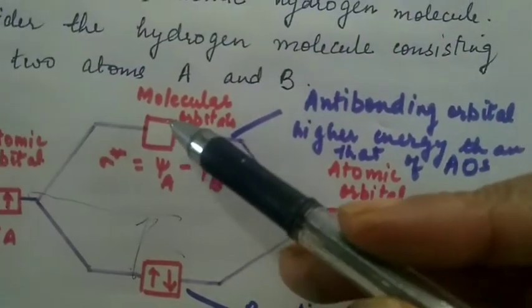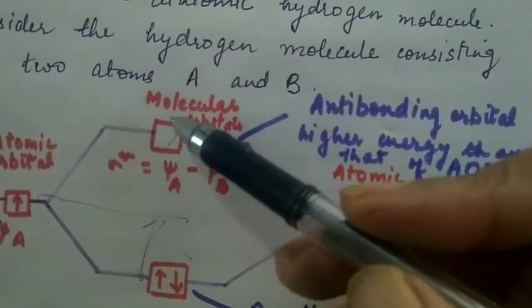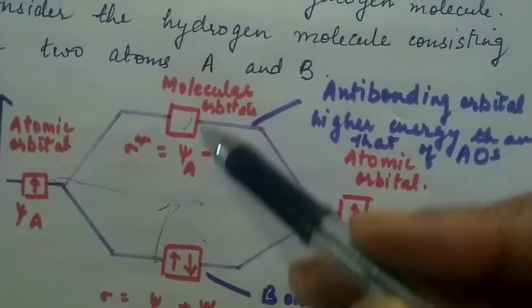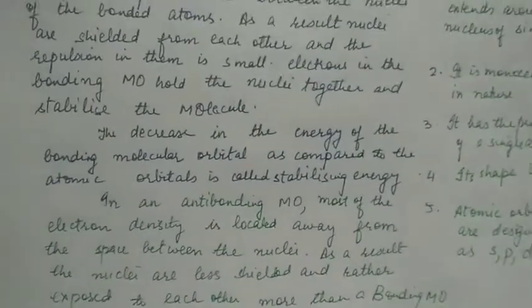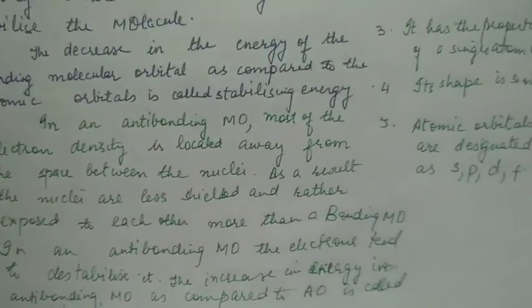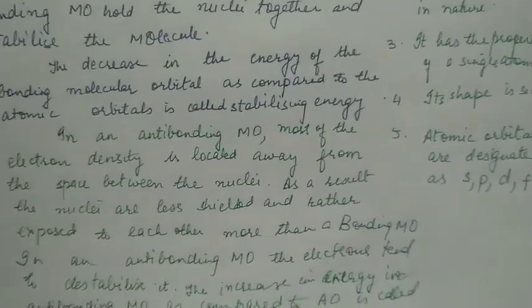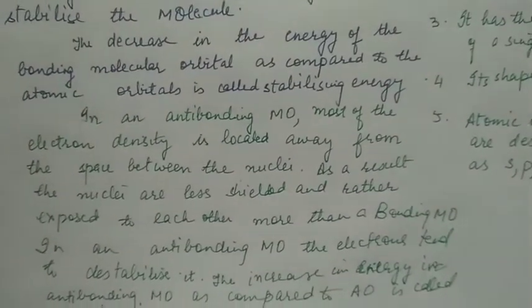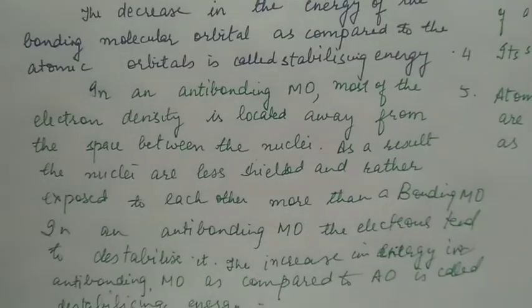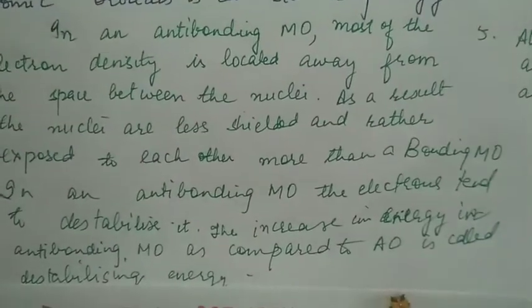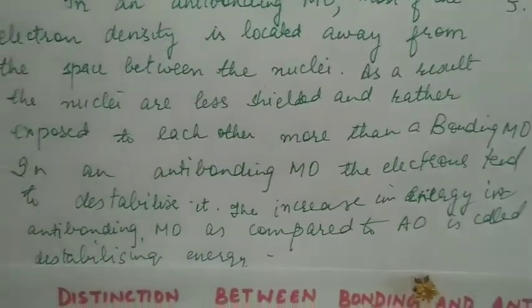Similarly, the difference between the energy of anti-bonding molecular orbital and the atomic orbital is called destabilizing energy. In an anti-bonding molecular orbital, most of the electron density is located away from the space between the nuclei. As a result, the nuclei are less shielded and rather more exposed to each other than in a bonding molecular orbital.